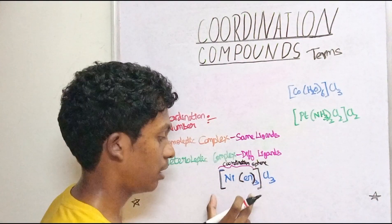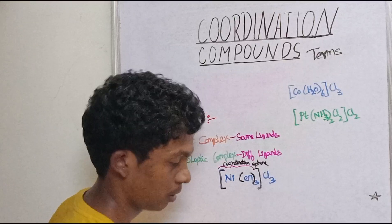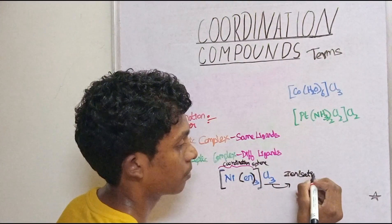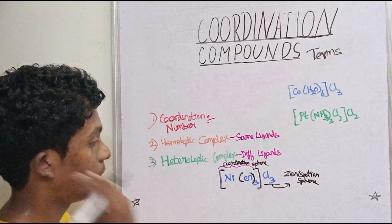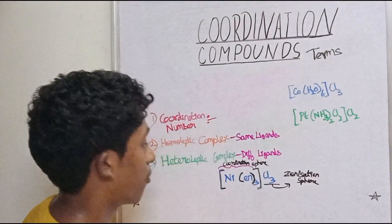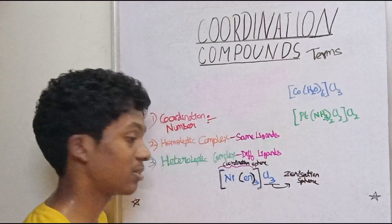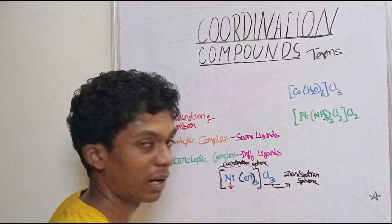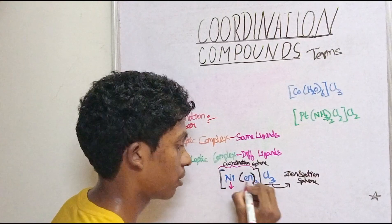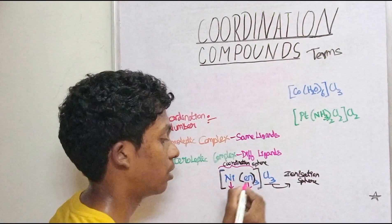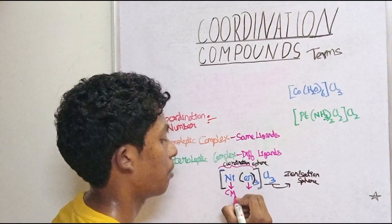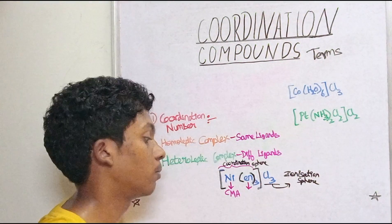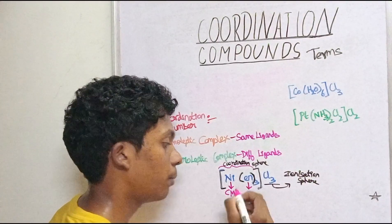If you are inside this coordination sphere, everything inside is the coordination sphere. Everything outside is the ionization sphere. Now let's look at the parts. There is a core in the coordination sphere — the metal part is CMA, the Central Metal Atom. It is a D-block metal.